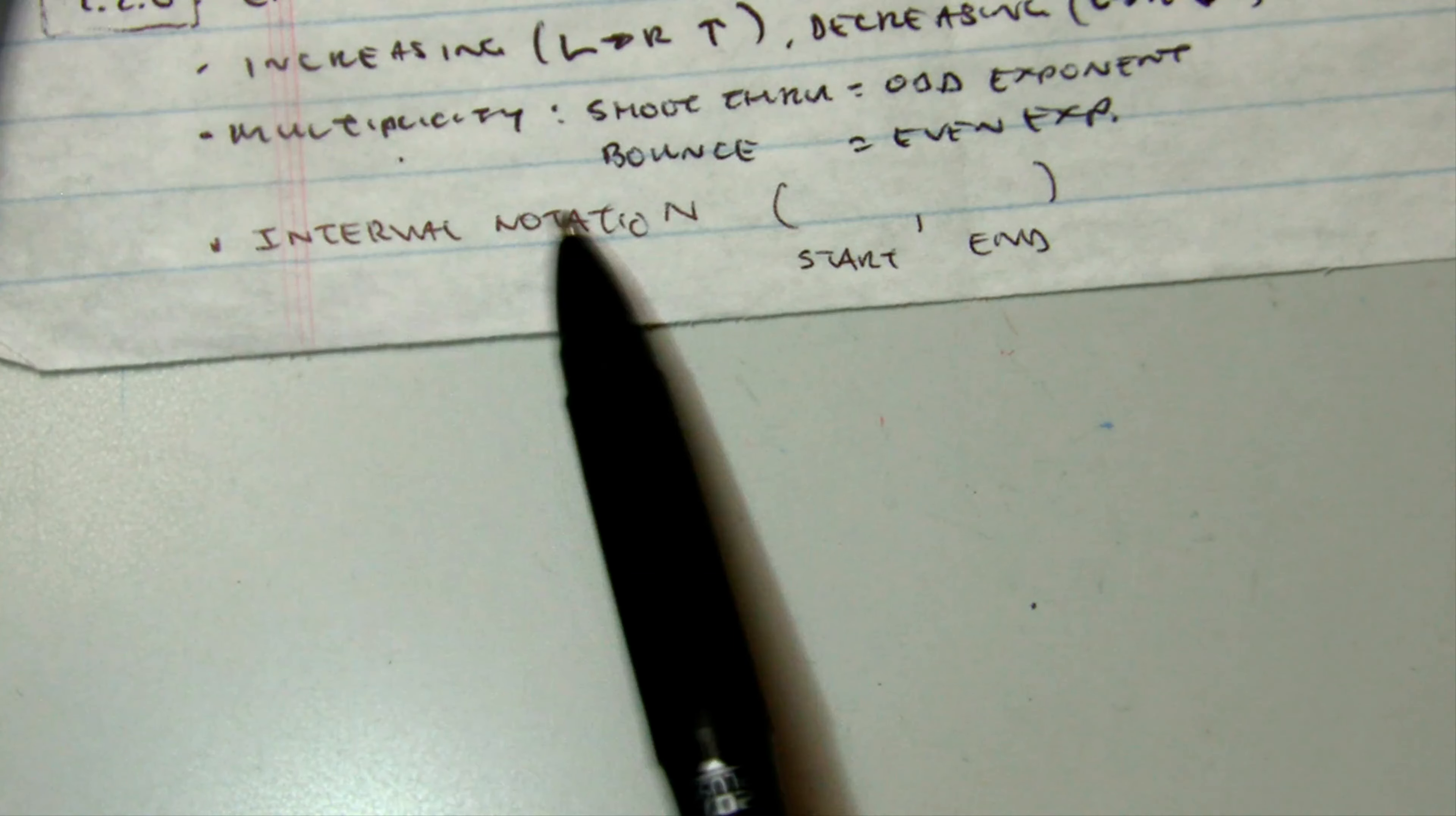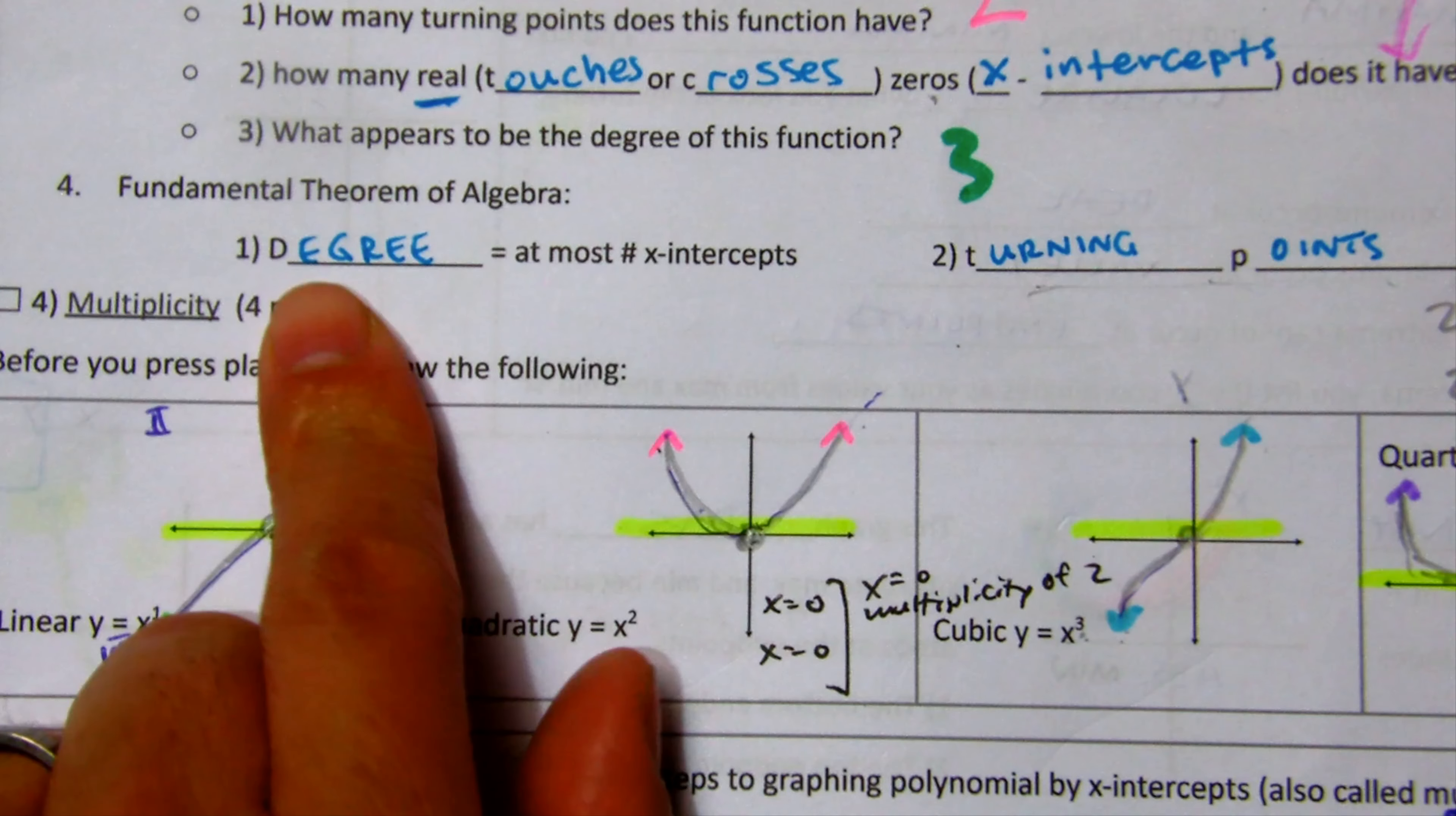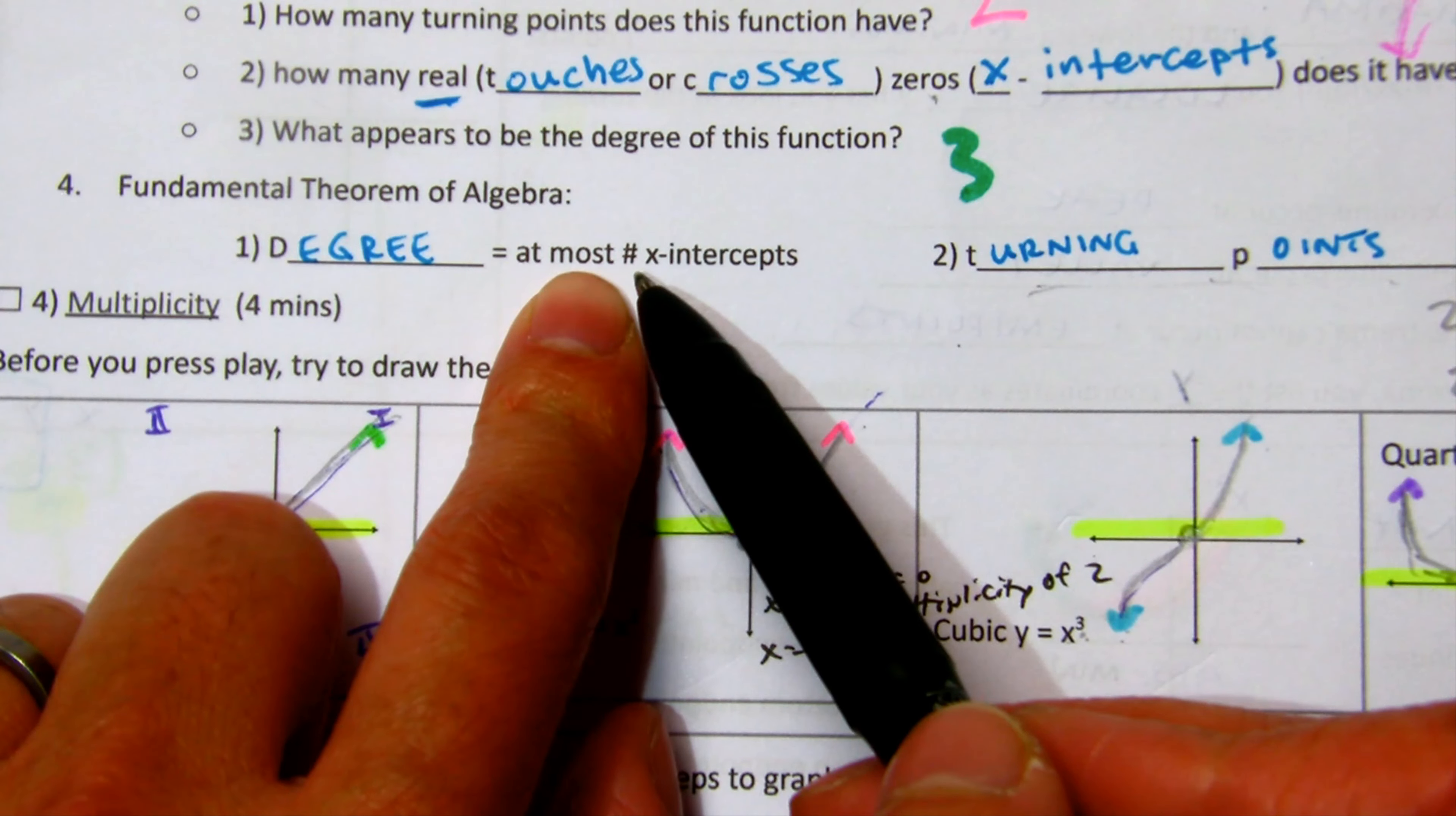Interval notation. It's not an ordered pair. It's just like the start and the end where it's increasing and decreasing. And the last thing we didn't talk about was the fundamental theorem of algebra. You know, the degree is equal to the most number of x-intercepts. So if it's a fifth degree, then at most, we'll have 5 real zeros.